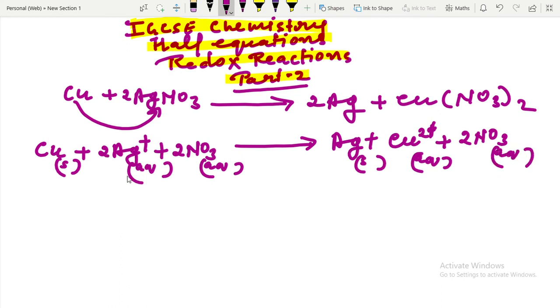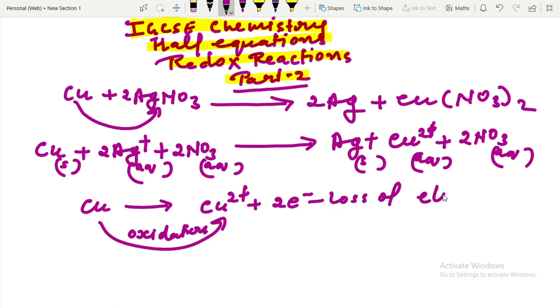The copper metal has been oxidized because it has lost two electrons to form copper two plus ions. So the half equation for this: copper becomes copper two plus cation plus two electrons. Here copper is oxidized, it is loss of electron.